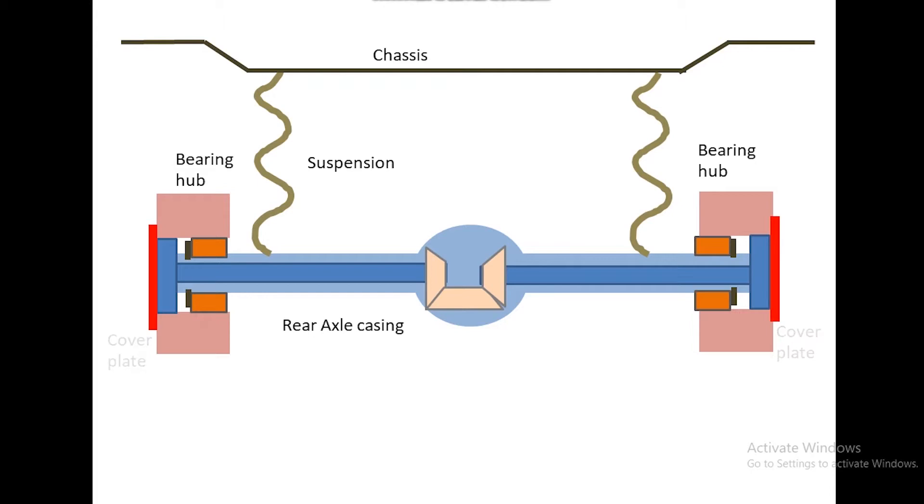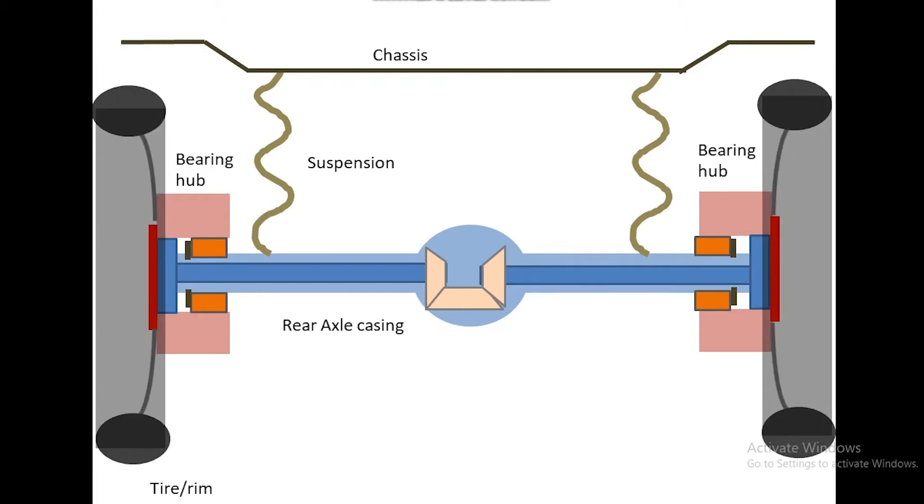Cover plate, it's also called dust plate. The drive wheel which is carried on the outer end of the axle housing by a pair of tapered roller bearings.